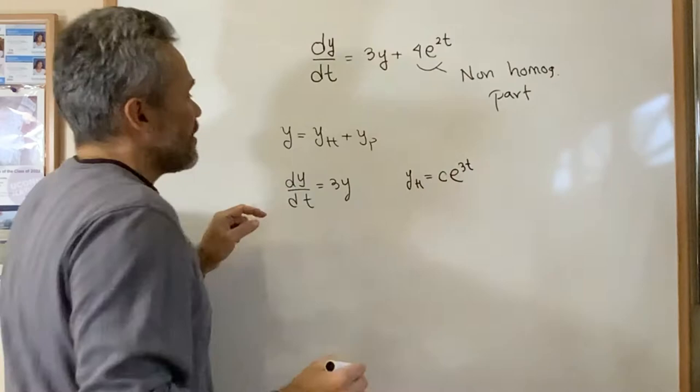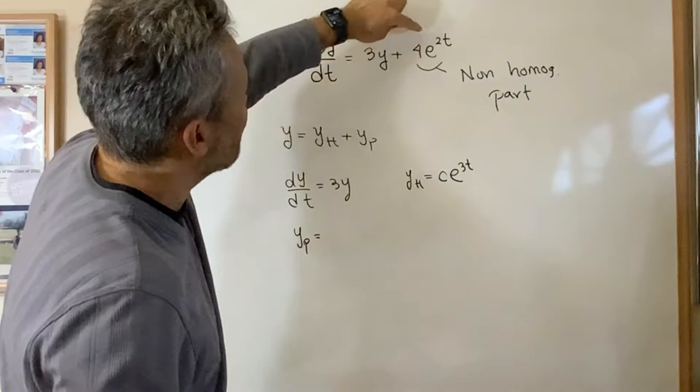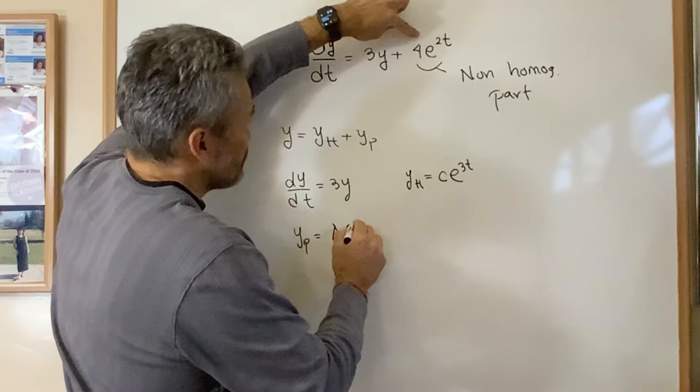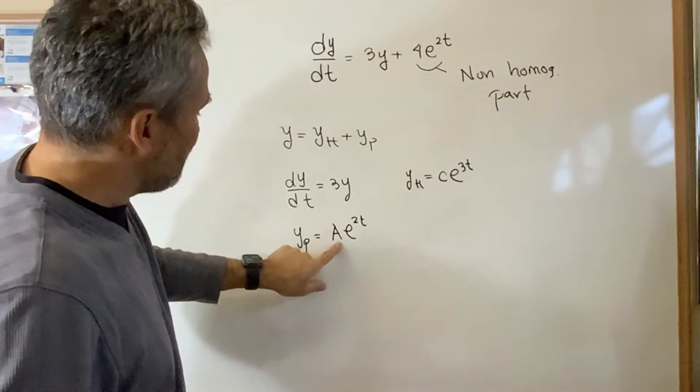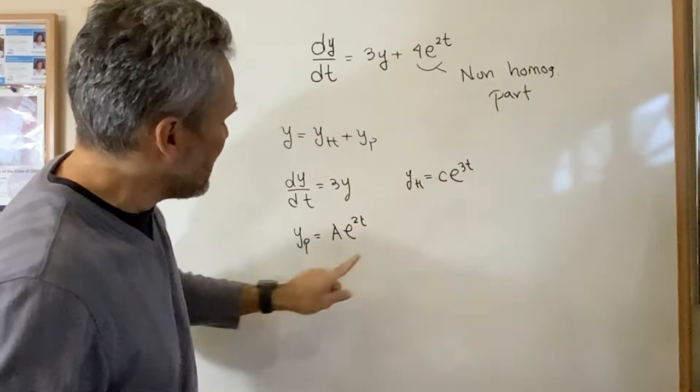Now we look for the particular solution. To find the particular solution, we look at the non-homogeneous part and then we look for something similar, a e to the 2t. One checkpoint that we need to do is we need to see if this particular solution is essentially the same as the homogeneous solution. It is not. Then this first guess is going to work.